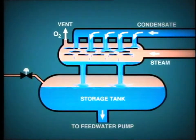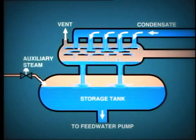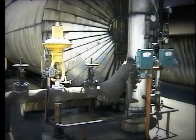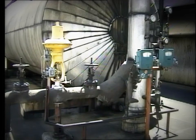During startup of the unit, before extraction steam is available from the turbine, partial deaeration is achieved by supplying live steam to the deaerator. This comes from the auxiliary steam system and is automatically controlled — when the extraction steam pressure falls below an established minimum, the live steam supply opens up.